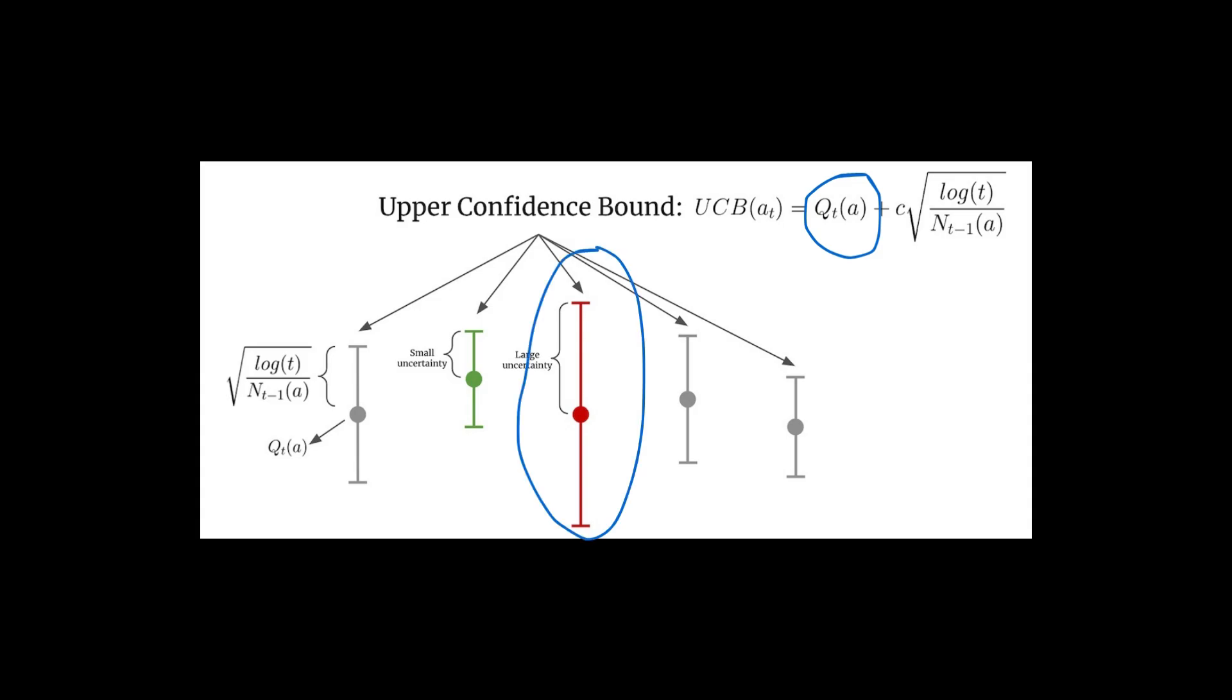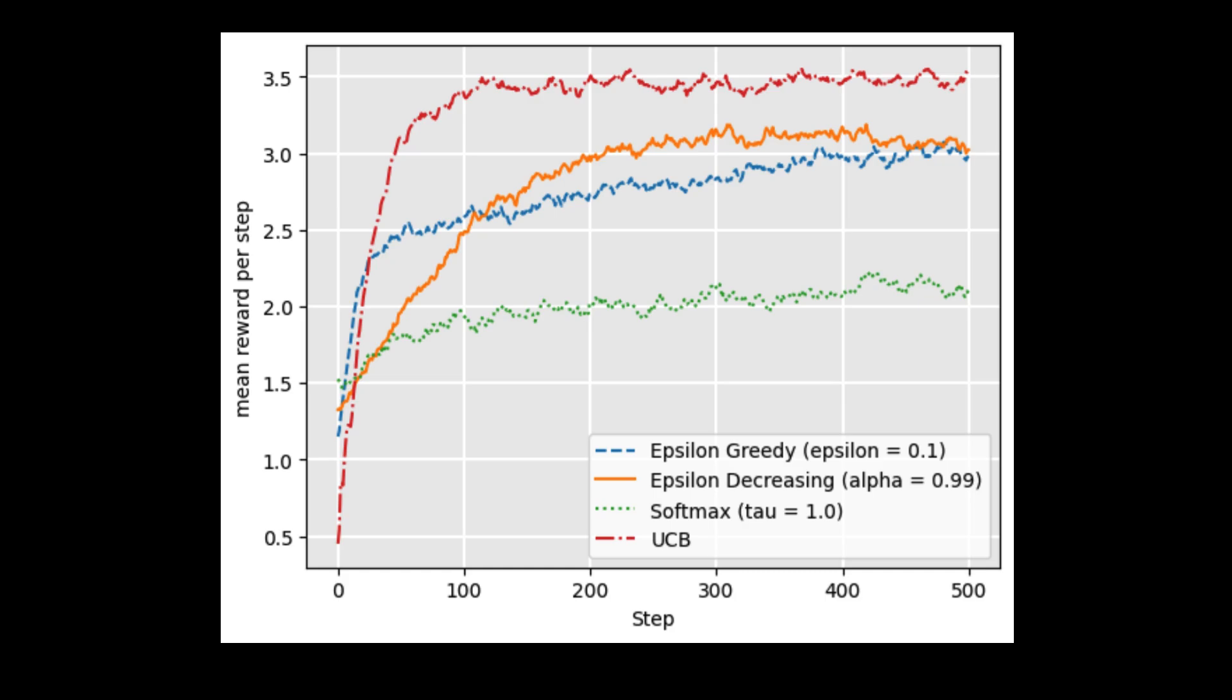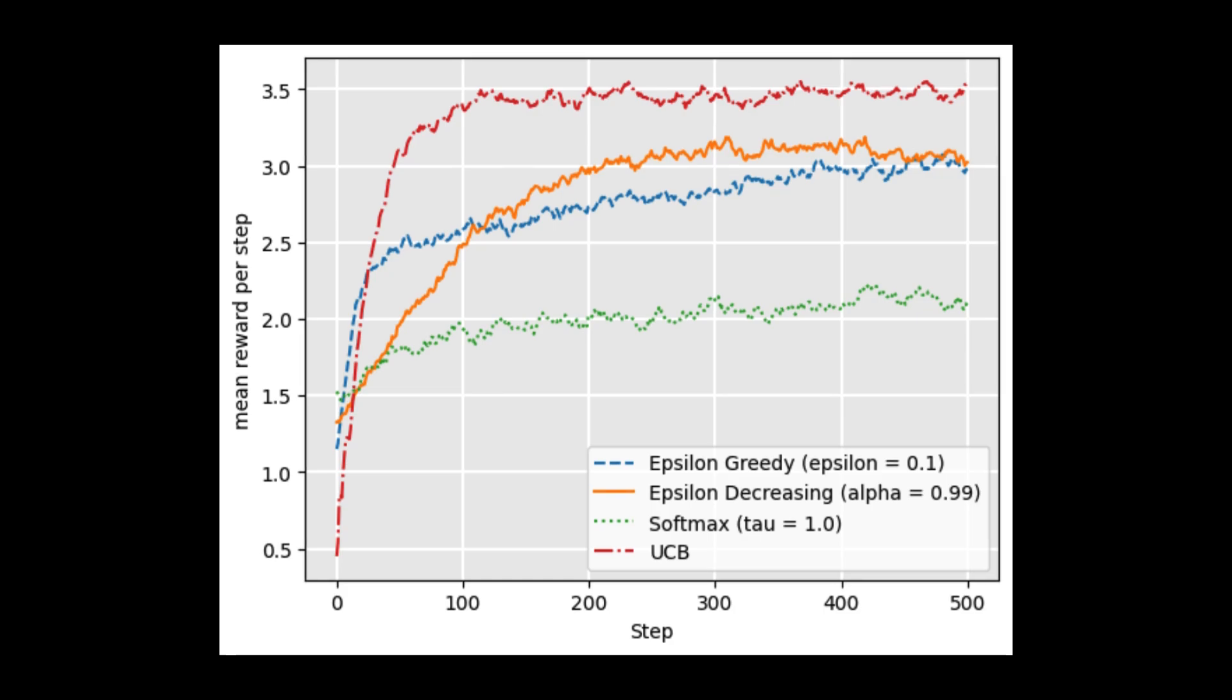You can see the value of Q is less for one machine that is in red, but there is a large uncertainty and that means the bound will be more. In the case of the green, the value of Q is very high, but the uncertainty is less and the bound will be less. As you can see from the graph, UCB on average obtains the highest reward for the simulation. If we extend the simulation period to be longer, we would eventually see epsilon-decreasing would start to achieve similar rewards to UCB, but it takes longer to converge.